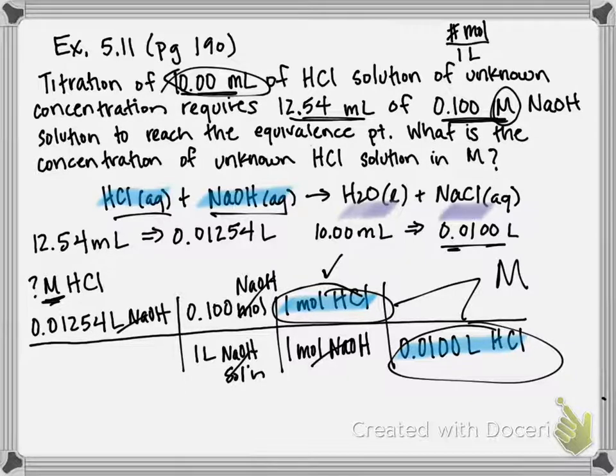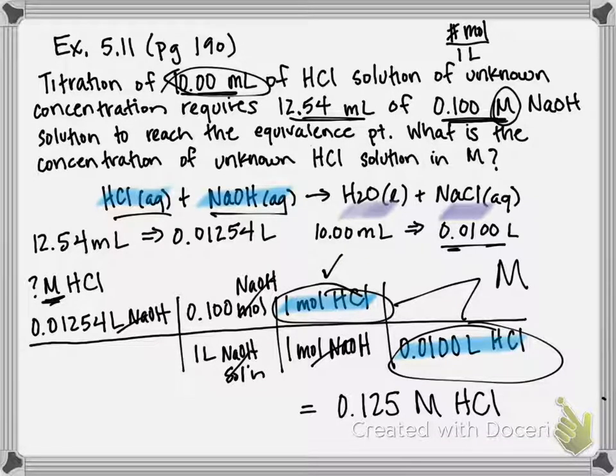So I can carry out this whole entire calculation and calculate in one step the molarity of HCl. So I'm going to take the liters of sodium hydroxide times 0.1 times 1 and divide that number by 1, 1, and then 0.011. And it should give me a molarity of 0.125 molar for HCl. That is your final answer for this solution stoichiometry problem utilizing titration.